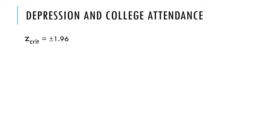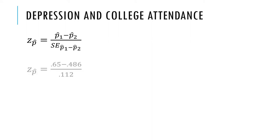We need a critical z value to test against. Because alpha is 0.05 and this is a two-tailed test — the alternative hypothesis uses 'not equal,' not greater than or less than — the critical values are plus and minus 1.96. Now we calculate z-observed for p1 minus p2. With our standard error of 0.112, the difference between the two proportions divided by the standard error gives us z = 1.46.